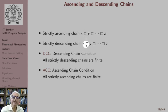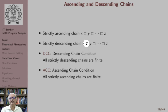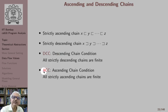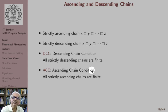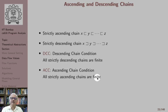Similarly, there is a dual where every element has the stronger relation as we go to the right, giving lower and lower elements — this is called a strictly descending chain. There are two important conditions: DCC, the descending chain condition, which says all strictly descending chains are finite; and ACC, the ascending chain condition, which says all ascending chains are finite. We will look at the relevance of these conditions for data flow analysis later.